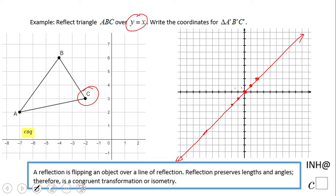So, 1, 2, 1, 2, 3. This is point C, negative 2 and 3. How are we going to do that reflection?